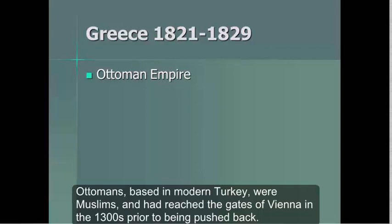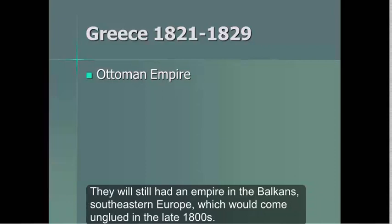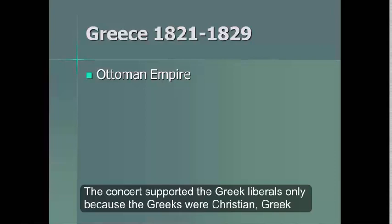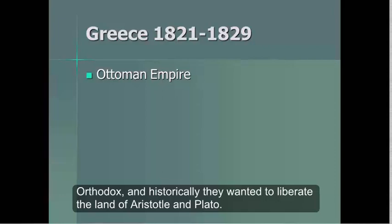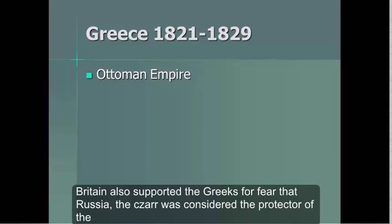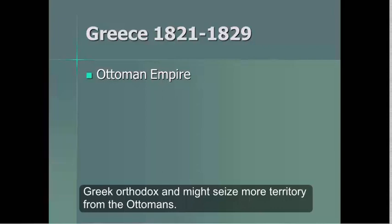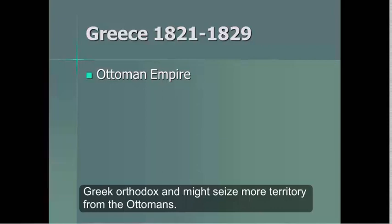In Greece in 1829, a liberal revolution did result in the freeing of Greece from the sick man of Europe, the Ottoman Empire. The Ottomans, based in modern Turkey, were Muslims and had reached the gates of Vienna in the 1300s before being pushed back. They still had an empire in the Balkans and southeastern Europe, which would come unglued in the late 1800s. The Concert supported the Greek liberals because the Greeks were Christian — Greek Orthodox — and historically they wanted to liberate the land of Aristotle and Plato. Britain also supported the Greeks for fear that Russia, considered the protector of the Greek Orthodox, might seize more territory from the Ottomans. So while the first few revolutions were put down by the Concert of Europe, the Concert disliked the Ottoman Empire and allowed the Greeks to gain independence.